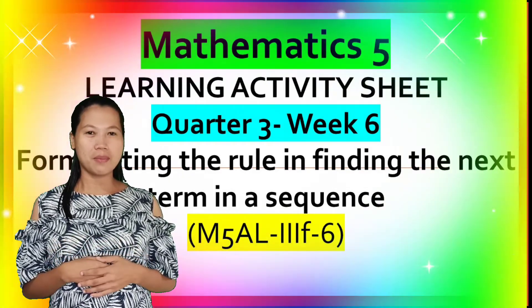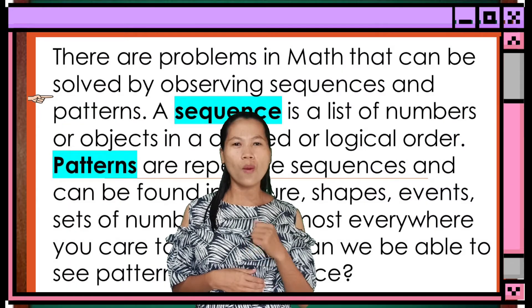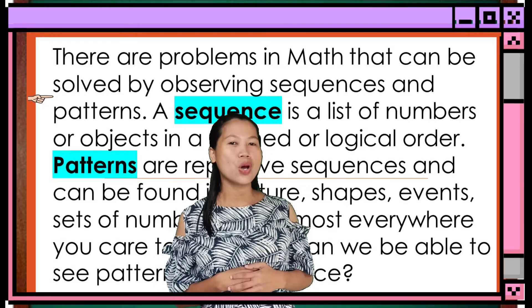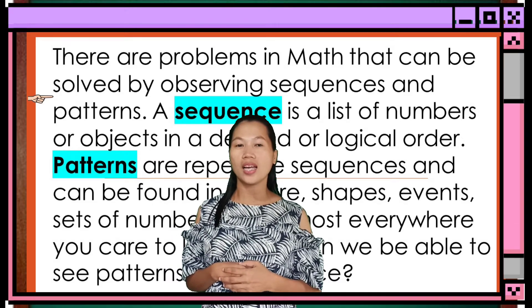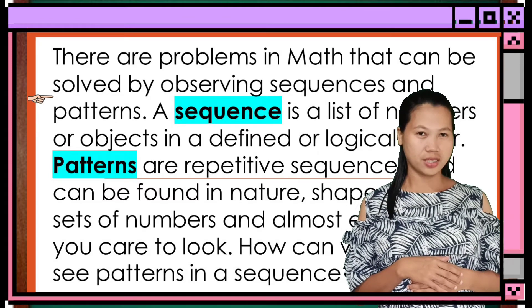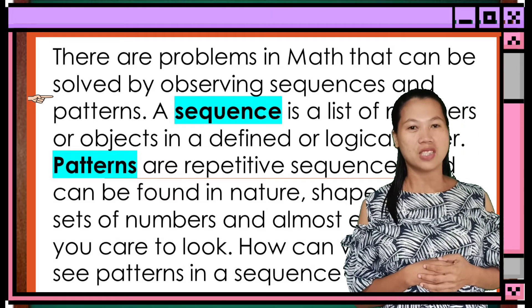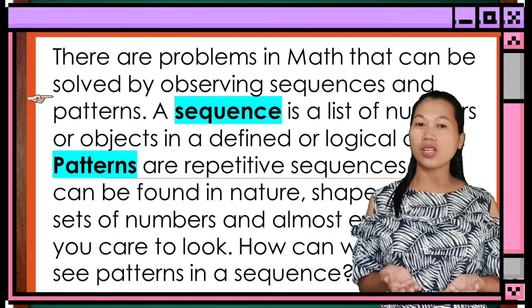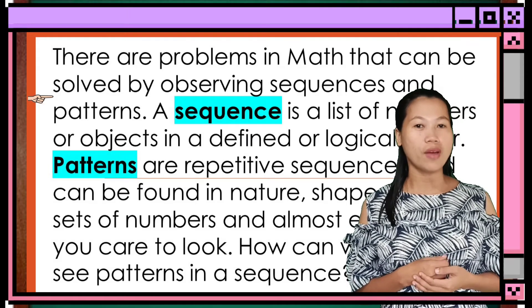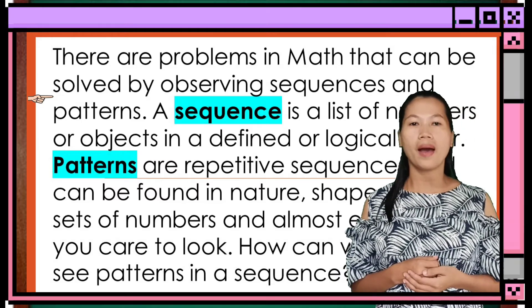There are problems in Math that can be solved by observing sequences and patterns. What is a sequence? A sequence is a list of numbers or objects in a defined or logical order. And what do you mean by pattern? Patterns are repetitive sequences and can be found in nature, shapes, events, sets of numbers, and almost everywhere you care to look. How can we be able to see patterns in a sequence?